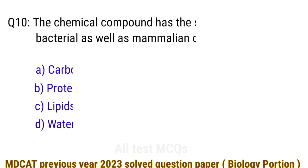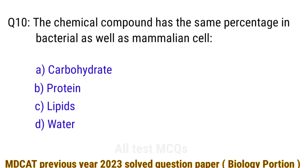Question number 10. Which chemical compound has the same percentage in bacterial as well as mammalian cells? The right answer is option D: water.